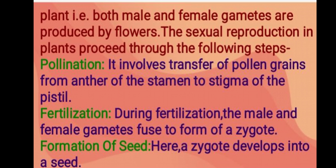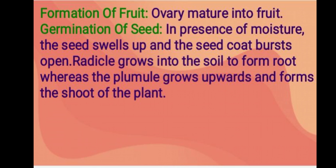Pollination: involves transfer of pollen grains from the anther of the stamen to the stigma of the pistil. Fertilization: the male and female gametes fuse to form a zygote. Formation of seed: the zygote develops into a seed. Formation of fruit: the ovary matures into a fruit. Germination of seed: in the presence of moisture, the seed swells up and the seed coat bursts open; the radicle grows into the soil to form the root, while the plumule grows upwards and forms the shoot of the plant.